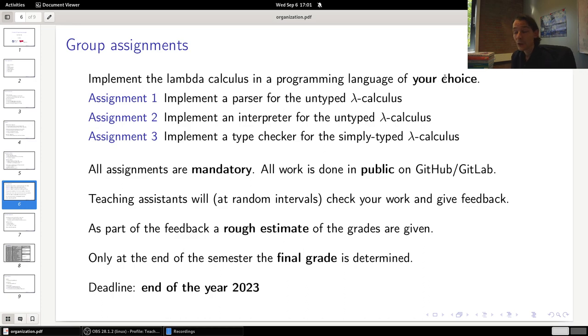Let me tell you a little bit more about the group assignments. After you've formed a group and you have chosen a programming language together with your group, and let me repeat myself, you can freely choose the programming language that you want to use. There are three programming assignments. In the first programming assignment, you will implement a parser for the lambda calculus. Building on top of the first assignment, in the second assignment you will implement an interpreter for the lambda calculus. In the third assignment, also building on top of the first assignment, you will implement a type checker for the simply typed lambda calculus. All these assignments are mandatory, so you have to at some point submit work. The way we're going to do this is by working in public, so the work you do is visible for everybody. You can do this on a service like GitHub or GitLab.